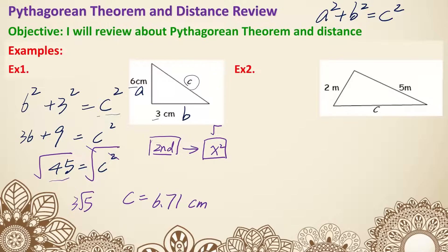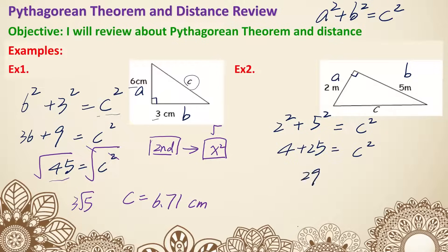You can pause here and try example two. It's basically the same idea. The two legs are two and five — let's say two is A and five is B. Two squared plus five squared equals C squared. Four plus 25 equals C squared, so 29 equals C squared. Take the square root: the square root of 29 gives you 5.39 after rounding. Don't forget the unit — meters. That's example two.